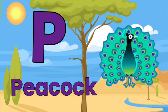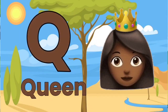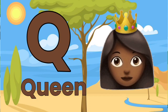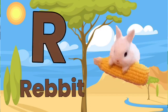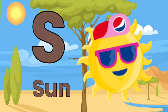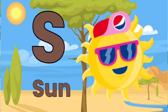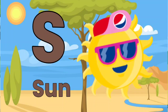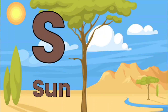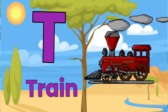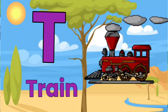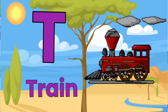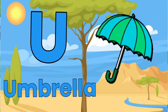Q for Queen, R for Rabbit, S for Sun, T for Train, U for Umbrella.